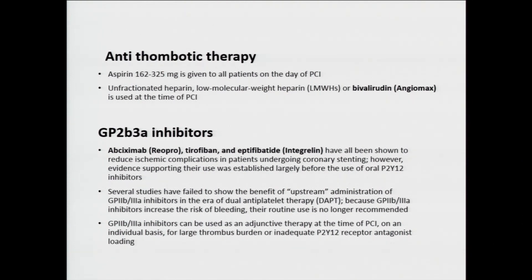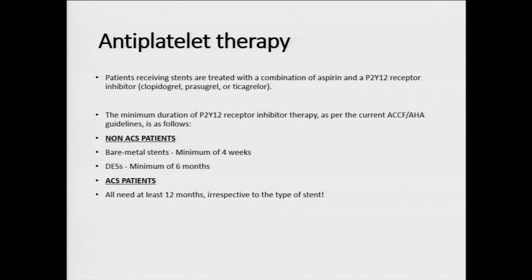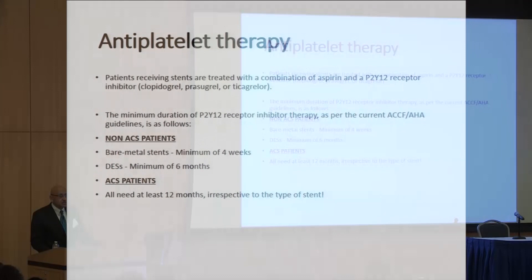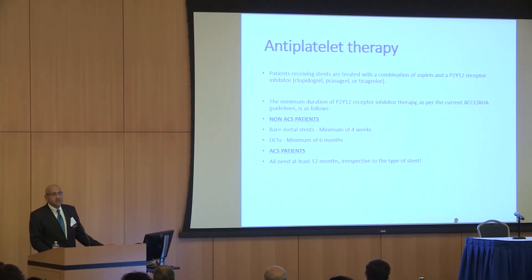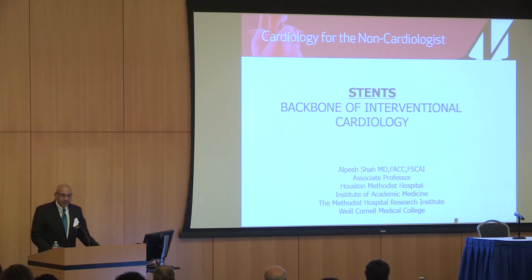Regarding antithrombotic therapy, my subsequent speakers will cover more detail. For antiplatelet therapy: patients who are non-ACS and receive a bare metal stent — now extremely rare, less than 1% — require antiplatelets for only four weeks. If they receive a drug-eluting stent, it is six months. However, if the clinical setting was ACS, every patient regardless of stent type requires dual antiplatelet therapy for 12 months. Thank you very much.